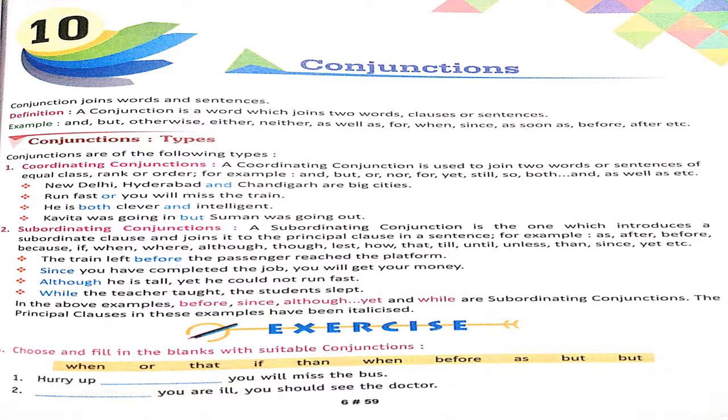Yojak means that the word which joins two sentences will be called your conjunctions. Like for example, I am just giving you that I didn't go to school yesterday because I had fever.